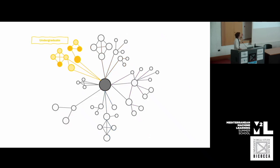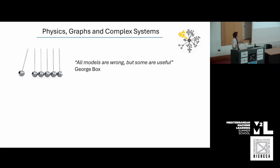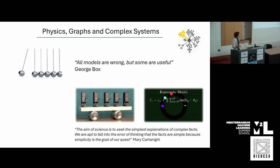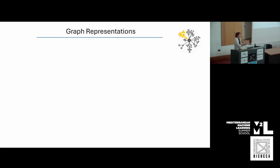My background was in math and physics. I started studying physics because I was interested in trying to understand how the world works. At the end of my undergrad, the phrase that resonated most was: 'All models are wrong, but some are useful.' What got me interested in graphs was trying to study complex systems — systems made of many different particles — and specifically understanding how the interactions between these particles affect the model and the outcomes.